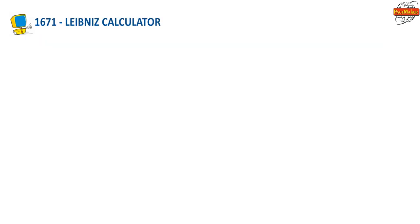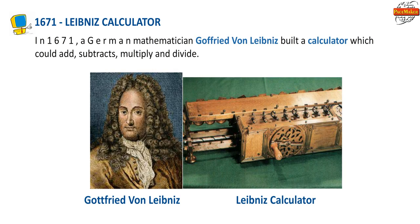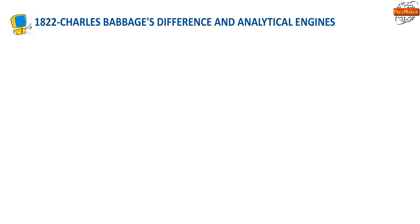1671 — Leibniz Calculator: In 1671, a German mathematician Gottfried von Leibniz built a calculator which could add, subtract, multiply and divide. Here are their pictures — Gottfried von Leibniz and the Leibniz Calculator.